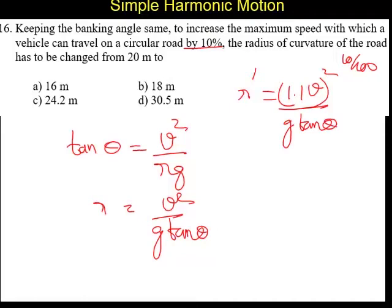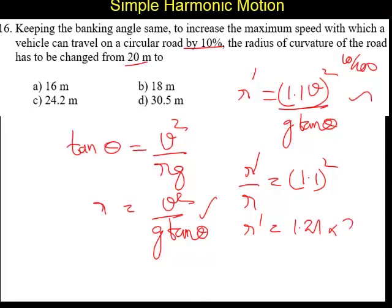Dividing this equation by R, R dash by R equals 1.1 the whole squared. So R dash equals 1.1 the whole squared, which is 1.21, and R value is 20 meters. So 1.21 into 20, the answer is going to be 24.2 meters is the new radius when you are increasing the velocity by 10 percent.